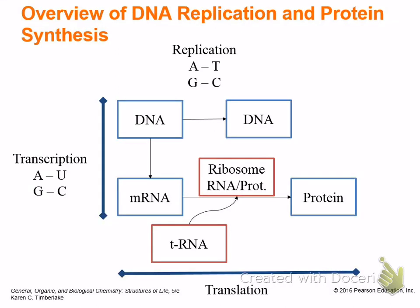This is an overview of what we're covering in the chapter. These are the processes of how DNA gets used in a cell. One thing we covered already is replication. In replication you have four bases — adenine, thymine, guanine, and cytosine — and those bases are attached to a sugar and a phosphate.